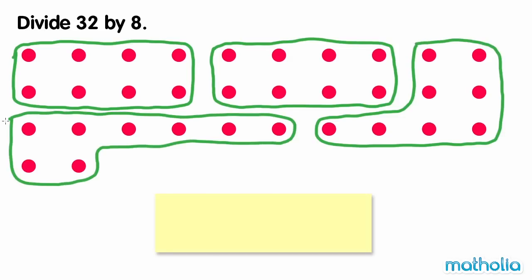We have made 4 groups of 8 dots. So 32 divide 8 equals 4.